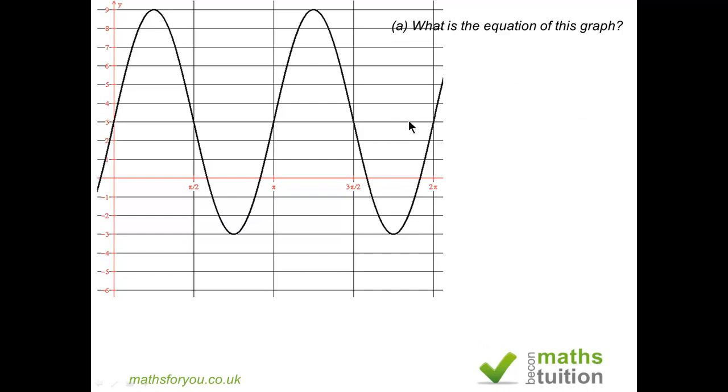It says what is the equation of this graph, and that's part A. For part B, what is the smallest value of x when y is 0 for x greater than 0 degrees? So in effect we're working between 0 and 2π radians.